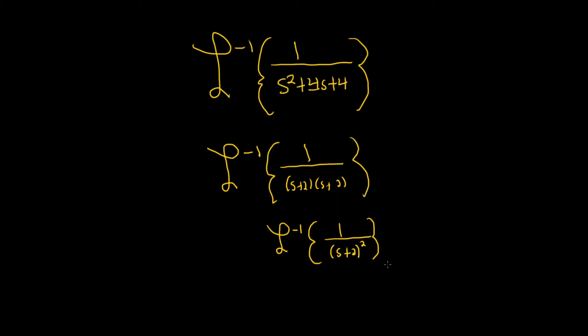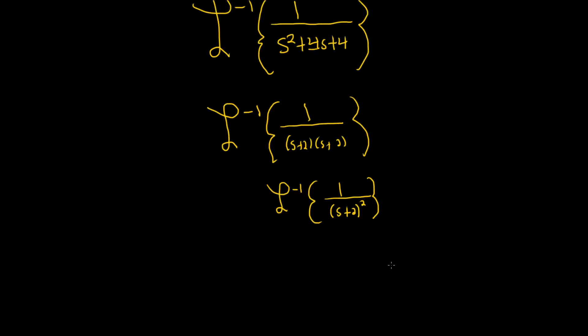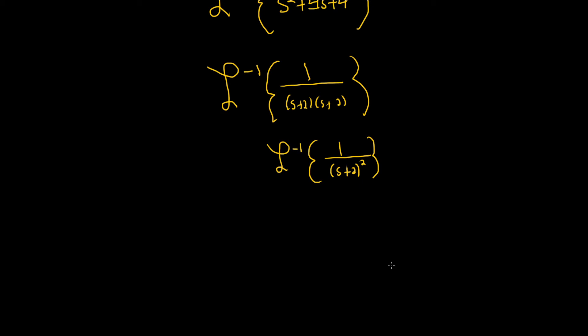The reason I wrote it this way is so we can use the first translation theorem. It basically says that whenever we do a shift it's going to give us an exponential.